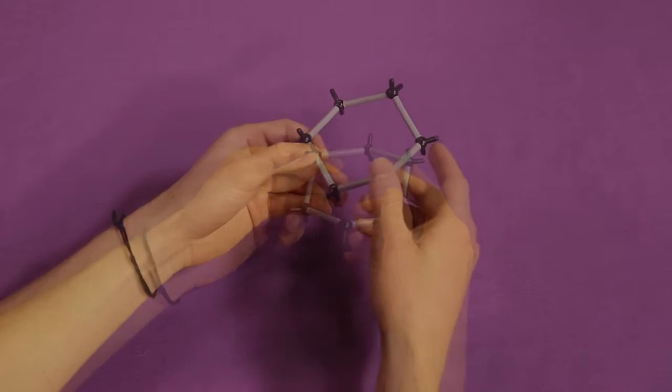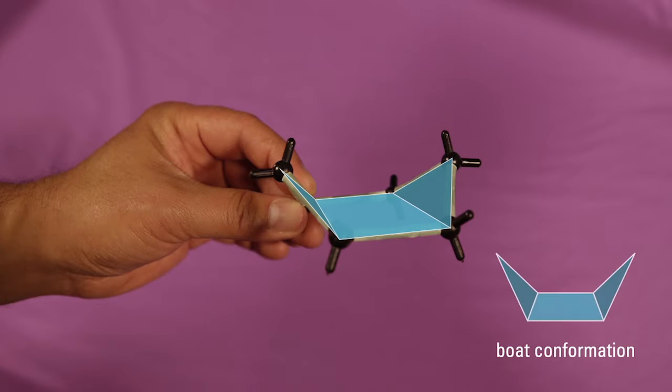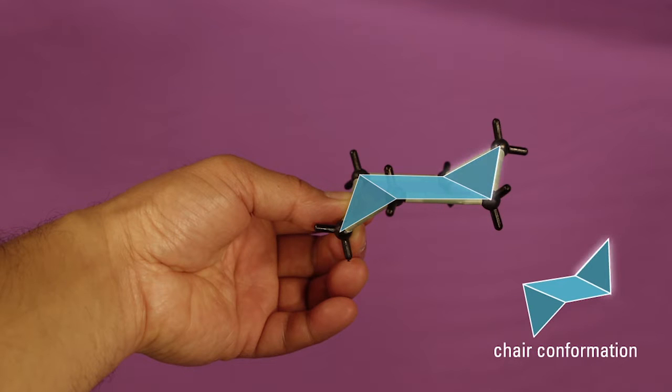We will be building the chair conformation of cyclohexane. There are other conformations, such as the boat conformation, but the chair conformation is the most stable because it induces the least strain on the bonds. It is named a chair conformation because it looks like a lounge chair with a back and foot rest.